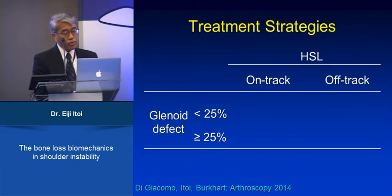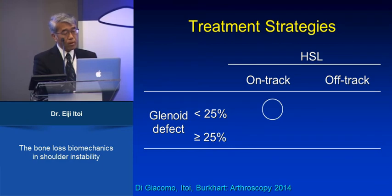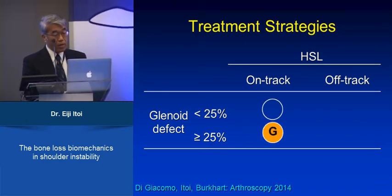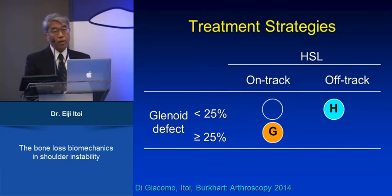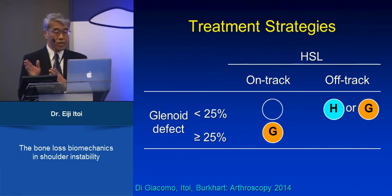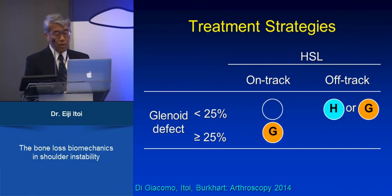Here is our treatment strategy. If the Hill-Sax lesion is on-track and the glenoid defect is small, don't worry about the bony defect — just fix the soft tissue. If the Hill-Sax is on-track with a large glenoid defect, we must fix the glenoid with a Latarjet or other bone graft. For off-track Hill-Sax with a small glenoid defect, this is the best indication for remplissage, although for throwing or collision athletes you might prefer Latarjet, since Latarjet converts an off-track Hill-Sax to an on-track Hill-Sax without touching the Hill-Sax lesion. For off-track lesion with a large glenoid defect, we always have to fix the glenoid.